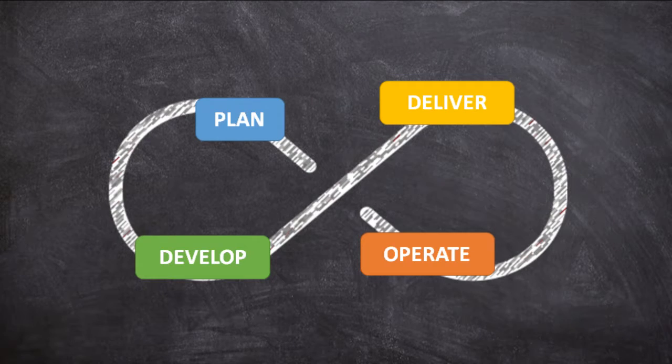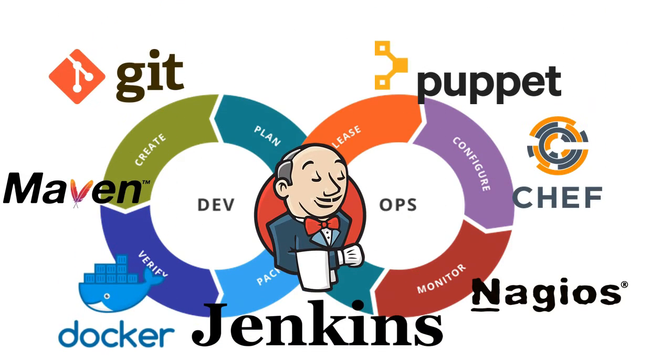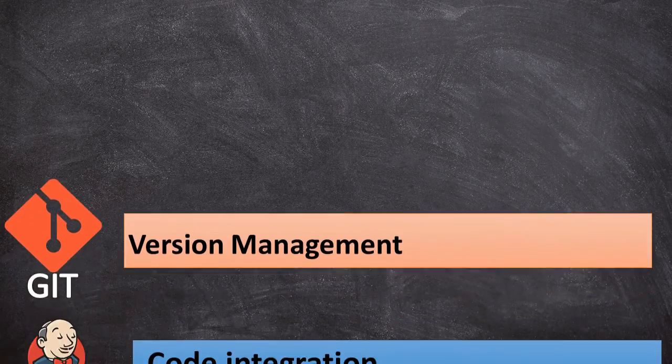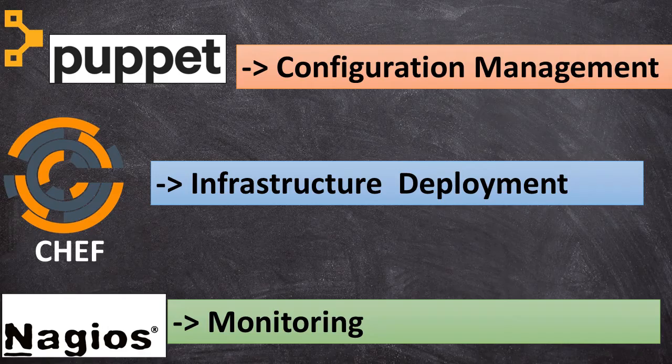Achieving true DevOps is only possible through building automation which is possible through a set of tools. Tools like GitHub, Jenkins, Maven, Puppet, Chef, Nagios.